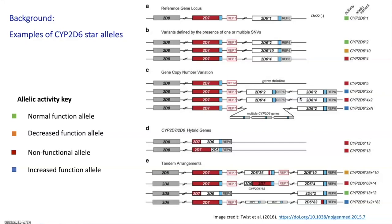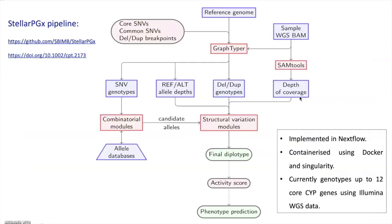Looking at some of these challenges with gene copies, it motivated us to develop a reproducible pipeline, StellarPGX, for calling star alleles in cytochrome P450 genes such as CYP2D6. What is unique about StellarPGX is that it employs graph-based variant detection at the beginning, and then also uses combinatorial star allele detection downstream.